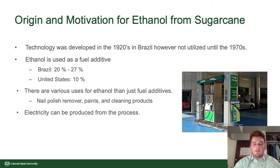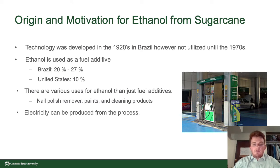Ethanol can also be used as an additive for many household products such as nail polish remover, paints, and cleaning products. Another benefit from the process involves burning the excess biomass that is not turned into sugarcane juice used to create ethanol. This biomass is exothermic when burned, therefore the heat can be used to generate electricity. This electricity generation is enough to power the process and can also create extra electricity that can be sold for a profit.